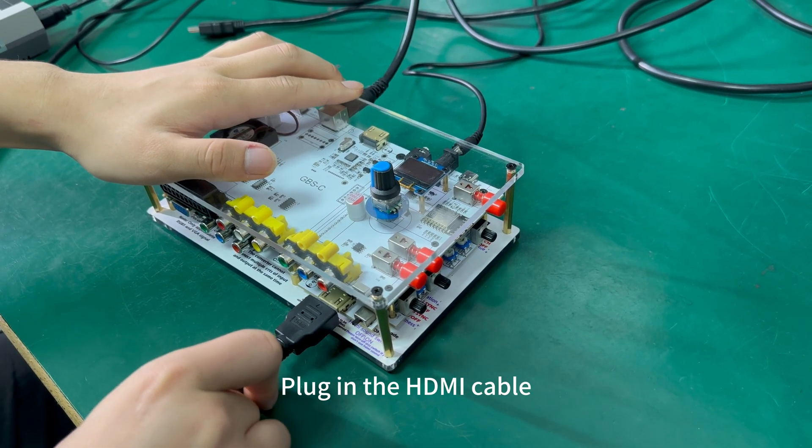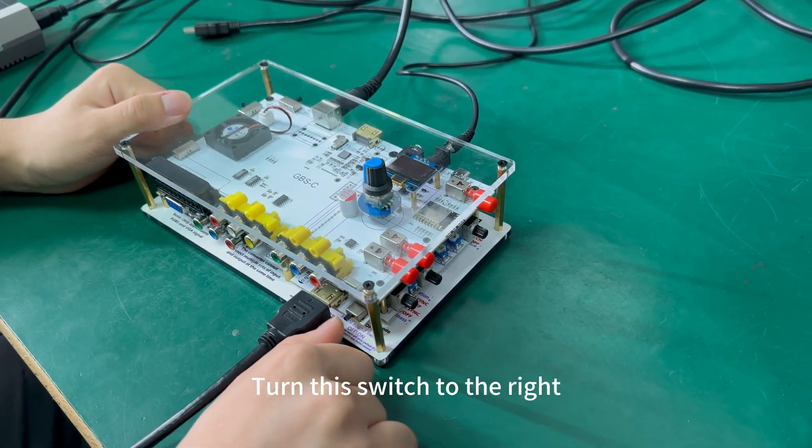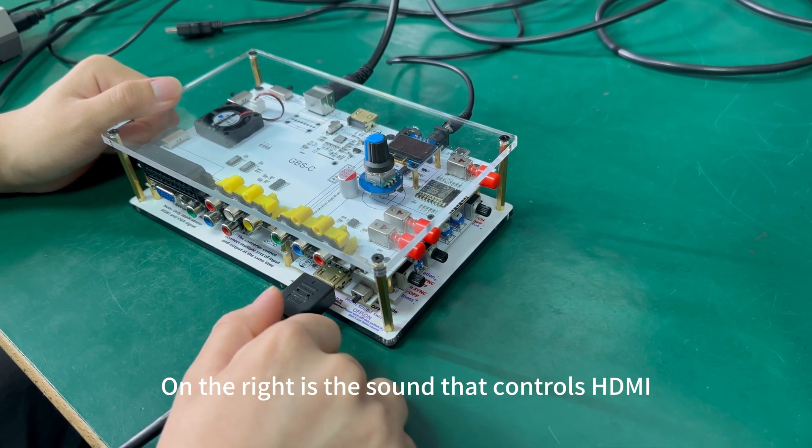When using the HDMI, plug in the HDMI cable. Turn this switch to the right. On the right is the sound that controls HDMI.